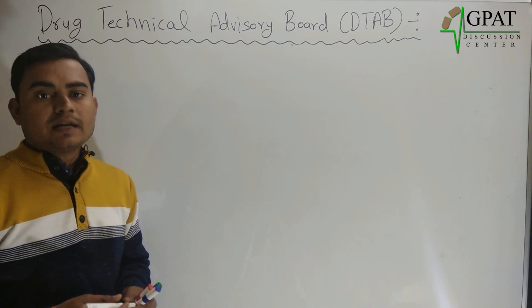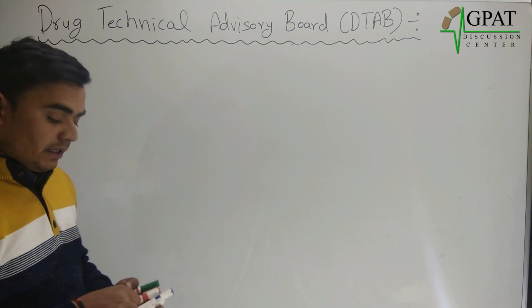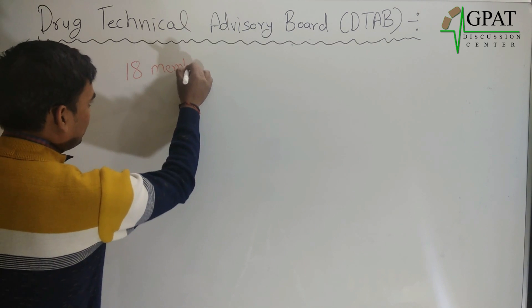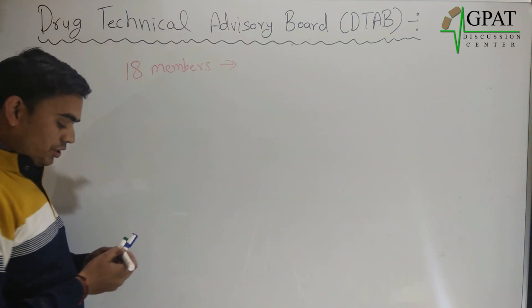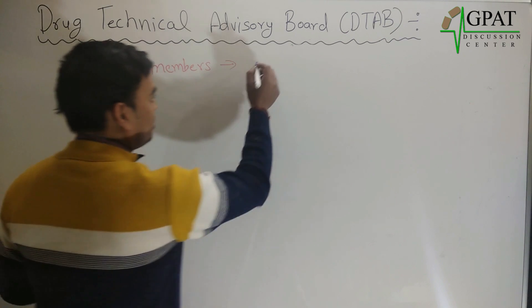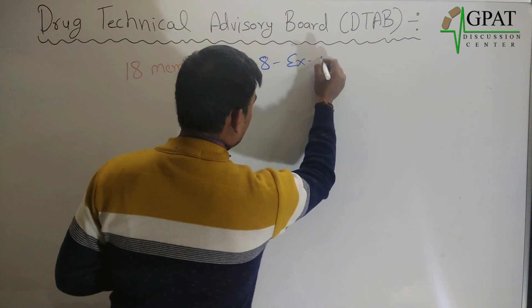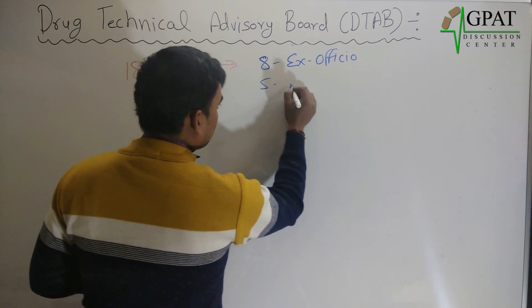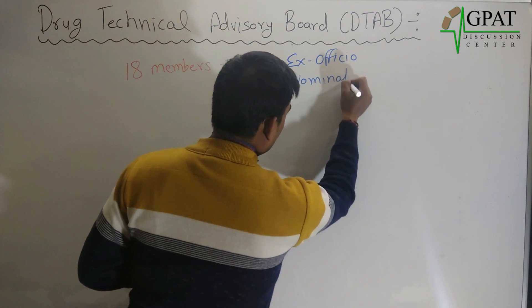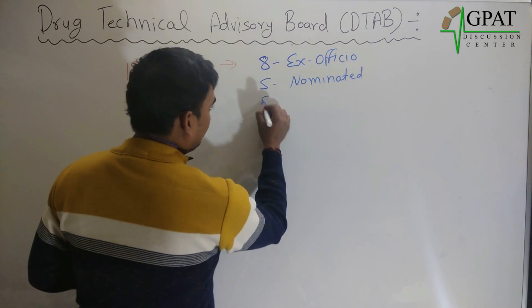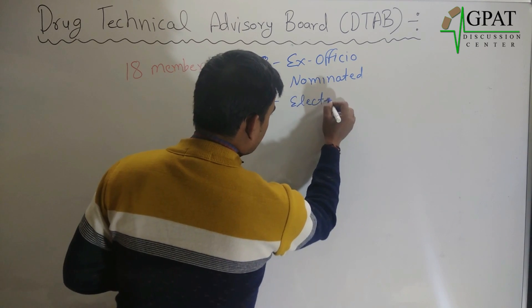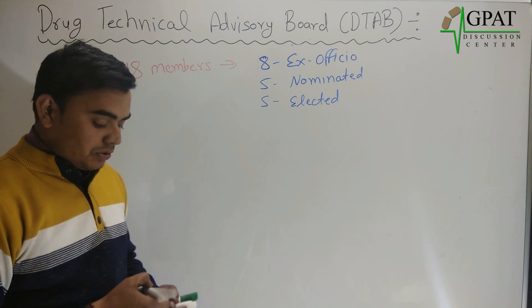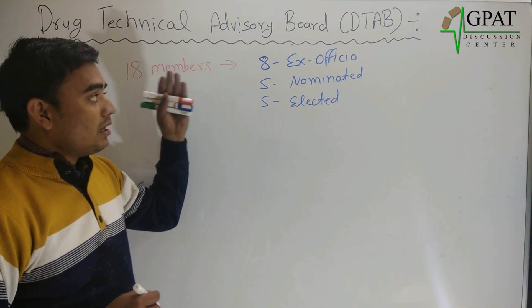Basically, the Technical Advisory Board consists of 18 members. Out of these 18 members, eight members are ex officio, five members are nominated members, and another five members are elected members. So eight plus five plus five equals 18 members total.